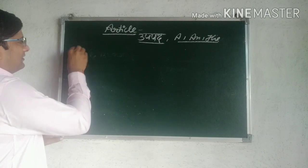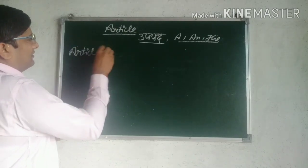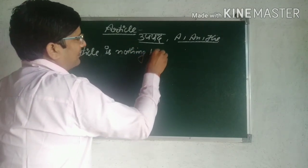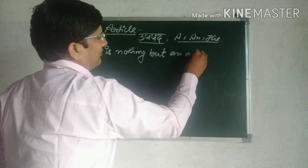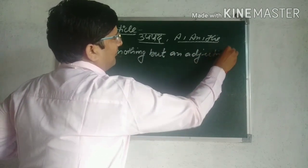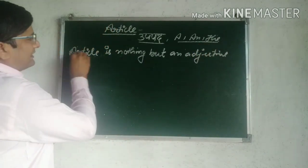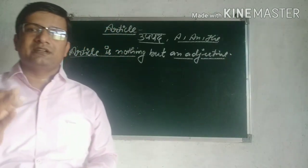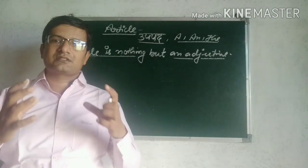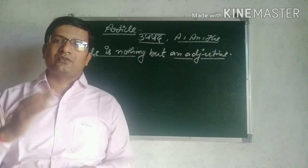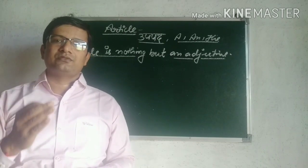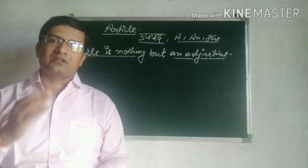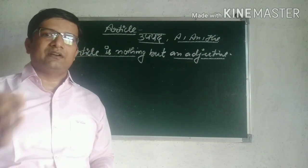Article is nothing but an adjective. It means article's position in the sentence is just like an adjective. Just as an adjective is generally used before the noun to qualify the noun, in the same way article is used generally before the noun to make the position of noun certain or uncertain, definite or indefinite.